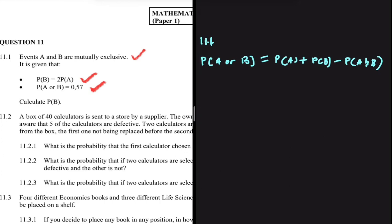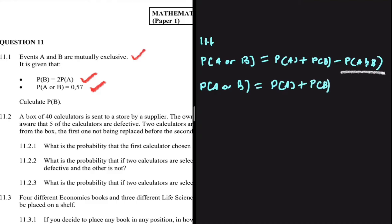Let's make sense of that. We have the probability of A and B. If two events are mutually exclusive, then the probability of A and B occurring at the same time is zero. For instance, it cannot rain and not rain at the same time at the same place — those two events are mutually exclusive. It's like you cannot pass and fail at the same time; it's either you passed or you failed. So the probability of A or B equals the probability of A plus the probability of B, because the probability of A and B occurring at the same time is zero.